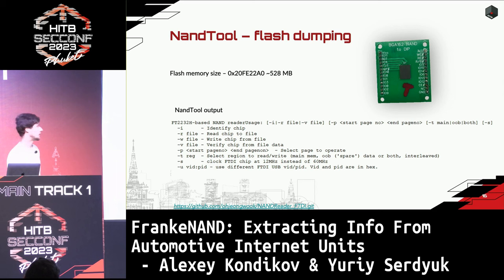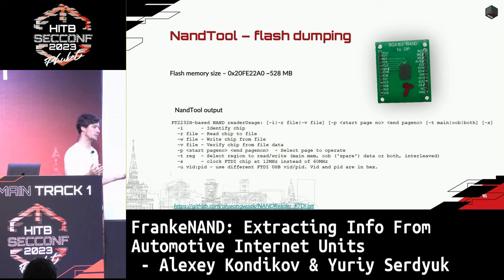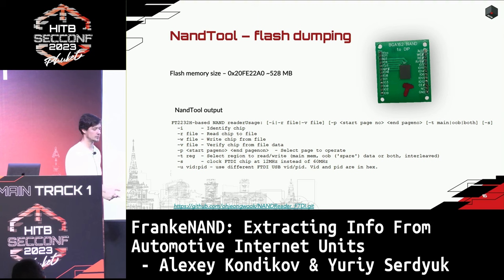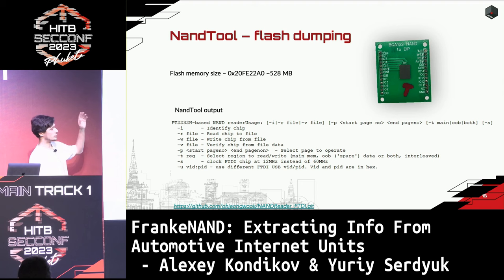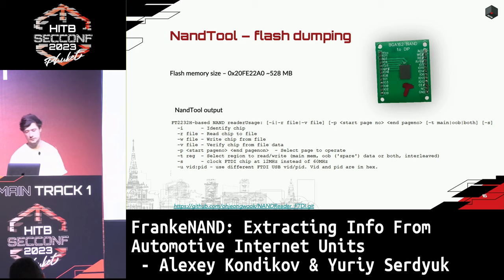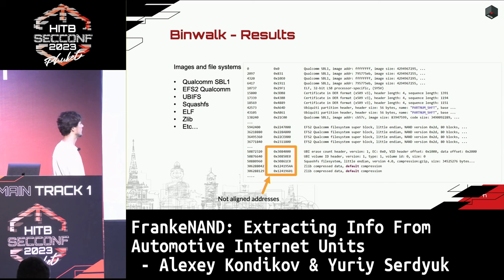To dump this memory we needed something basic that provides an opportunity to dump raw memory without any chip identification process — just a tool working on basic NAND protocol. We found NANDtool, a straightforward open-source tool written in C. You can download and compile it; it works fine with the reader we made. After finally dumping the image, we ran binwalk on it.